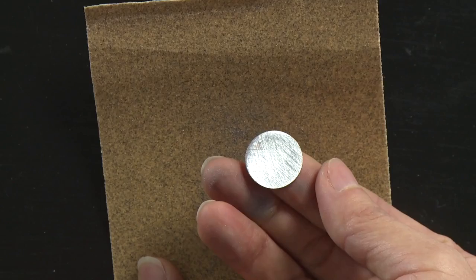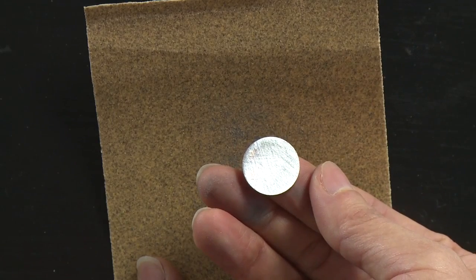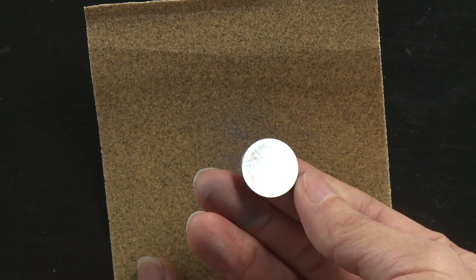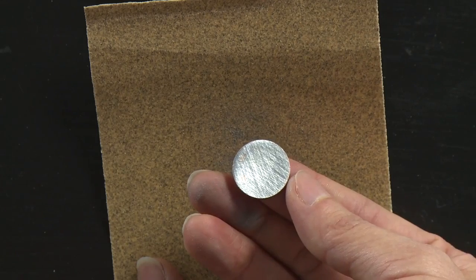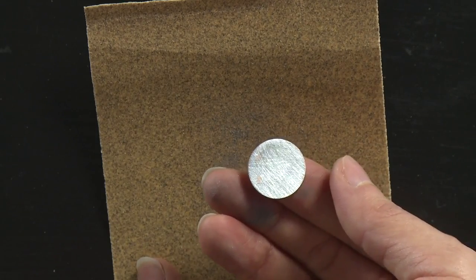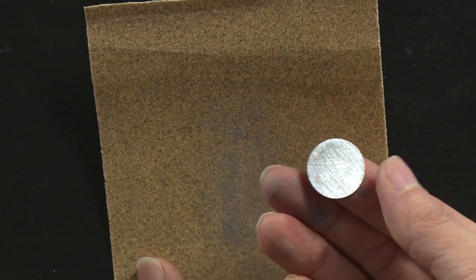Eventually you'll see that you've sanded off the entire copper surface of the penny. The whole face is this shiny silvery zinc color. So go ahead and do that with the other three pennies that were made after 1982.